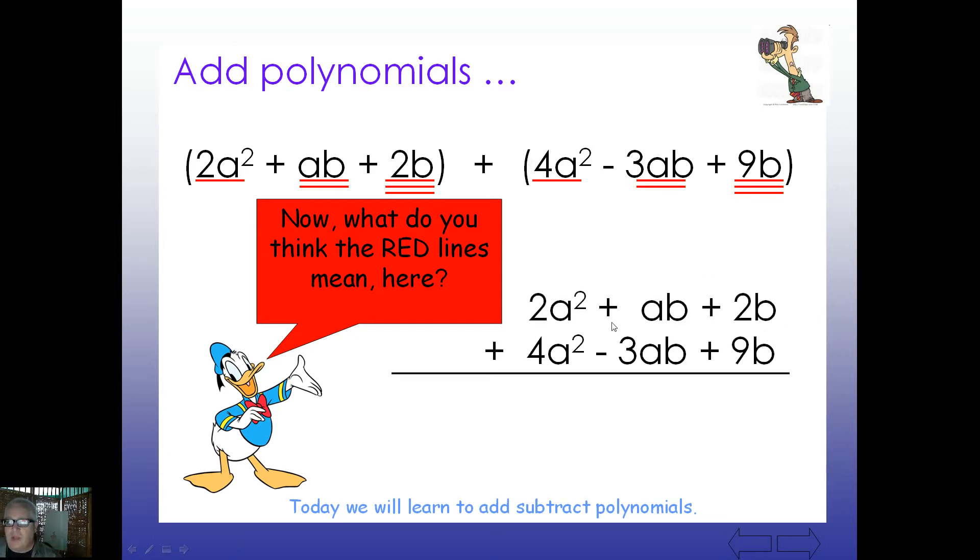So we can simply line these up. We can take the ones that we underlined here. 2a² and 4a² notice they're lined up. We have 1ab and -3ab, they're lined up. And 2b and 9b are also lined up nicely. Now, since they're lined up, we can add like terms. We just simply take the 2 and the 4 and put it together. And we end up with 6a². Notice we're not changing the exponent. Sometimes there's a temptation to add the exponents as well. We're not multiplying here, we're adding. So the exponent stays the same.